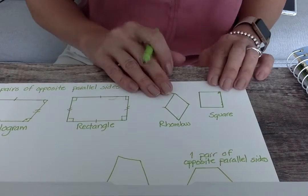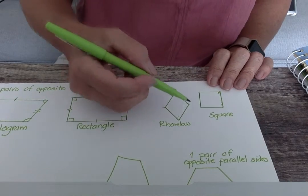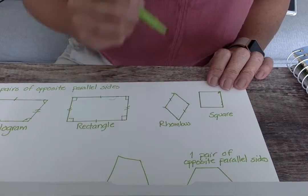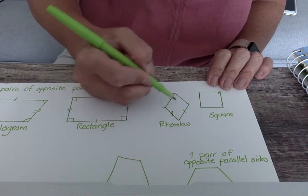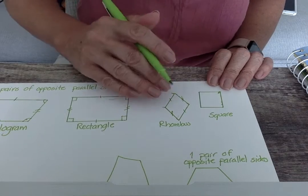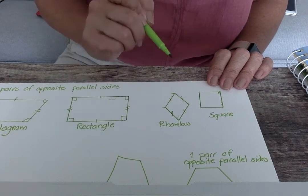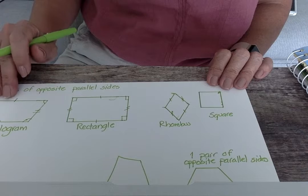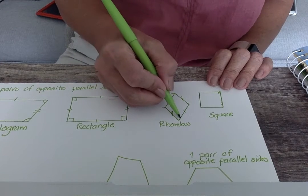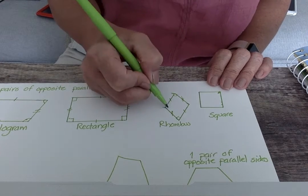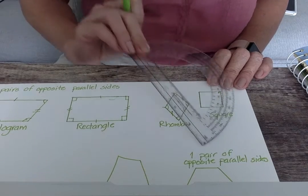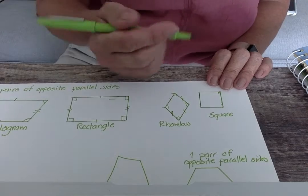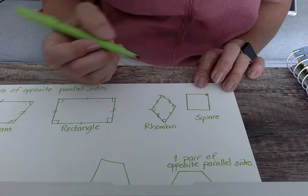A rhombus has opposite sides, so this side and this side are opposite, and they're parallel, and then this side and this side, they're opposite, and they're parallel. And also their angles, kind of like the parallelogram, since it's kind of slanted. So this angle and this angle measures the same, and this one and this one measure the same. And we can go ahead and measure them if you want to, and you can do that in your books later on if you want to.